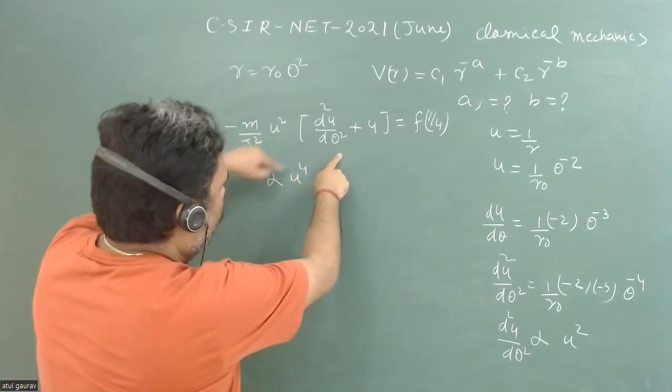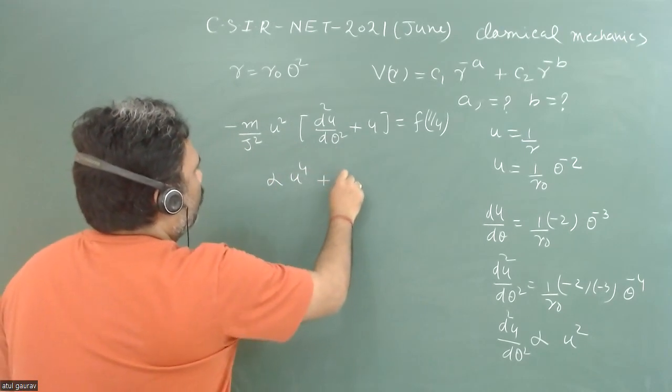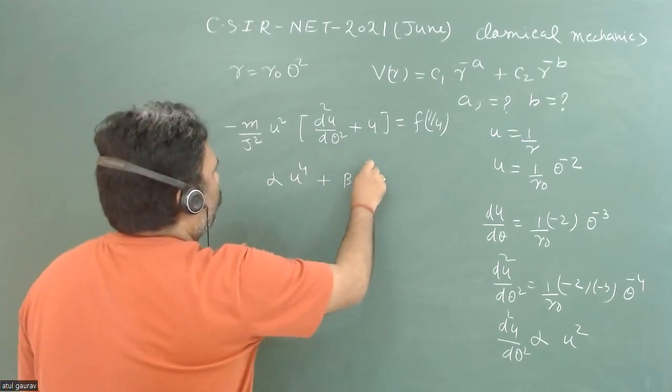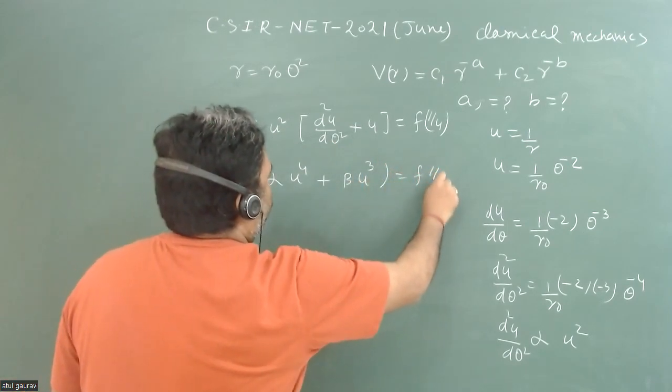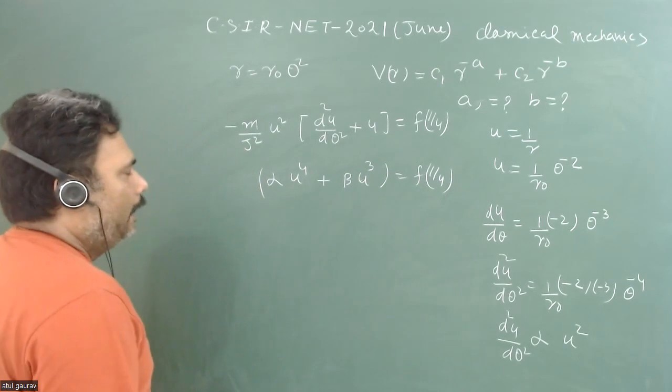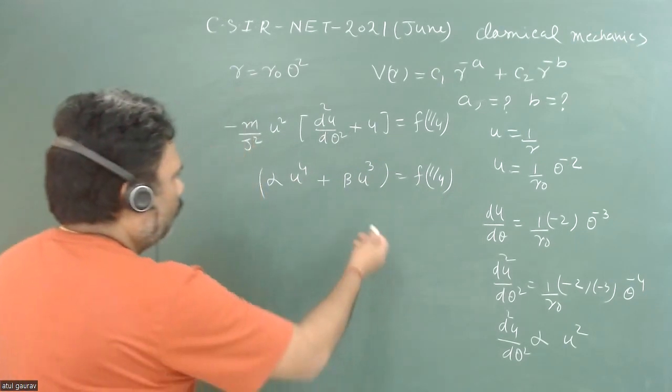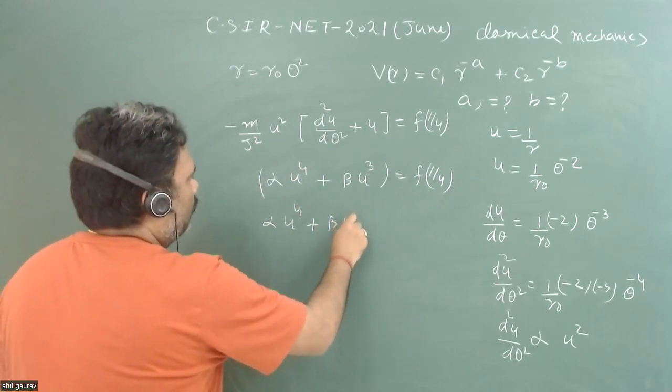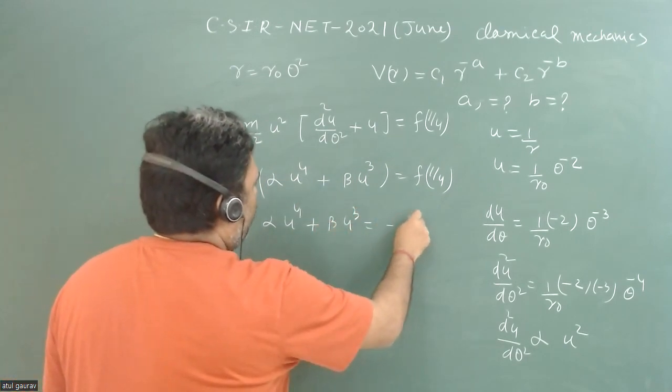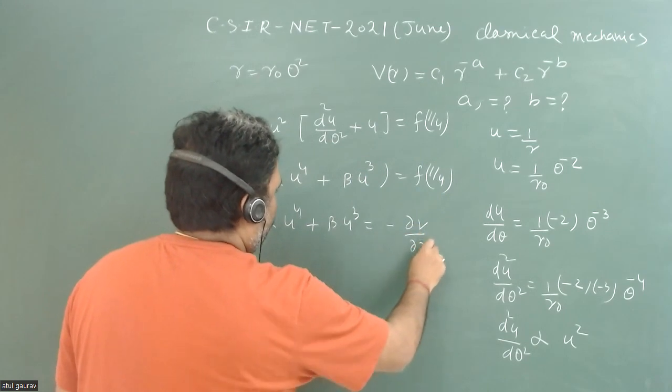This u and this u square is u to the power 4 plus beta u to the power cube equals f1 by u. And when we will go for this particular thing alpha u to the power 4 plus beta u to the power cube is minus del v upon del r.